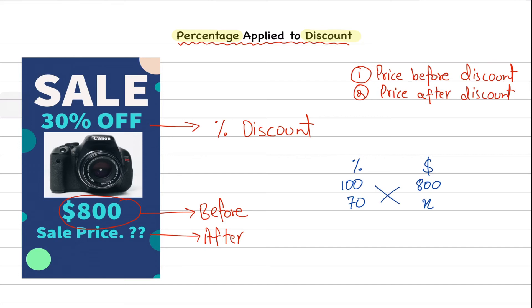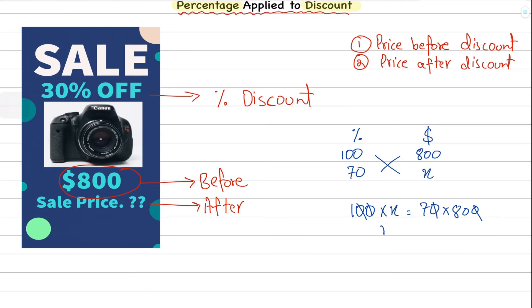We can work this out by cross multiplying, so 100 into x equals 70 times 800. We're going to cross out the zeros, 7 into 80 equals 560 dollars. So the sale price or the price after the discount is equal to $560.